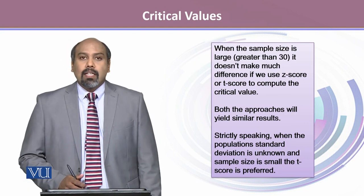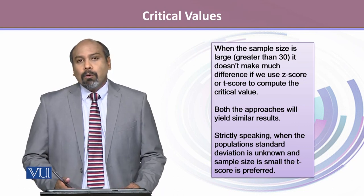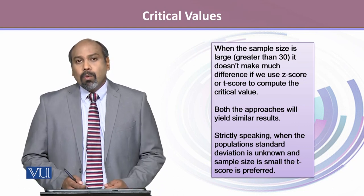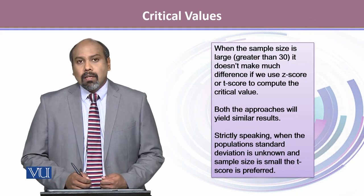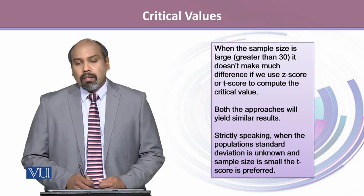When the sample size is large, that is greater than 30, z-score and t-scores are equally preferable because they both will yield the same results. But for smaller sample sizes, t-score is preferred.